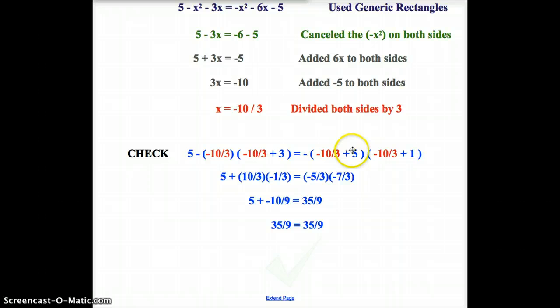Negative 10 thirds plus 5 is 5 thirds, but then the opposite of that would be negative 5 thirds. And negative 10 thirds plus 1 would be negative 7 thirds. I then multiply these two terms together to get my negative 10 ninths. I multiply these two terms together to get my positive 35 ninths.